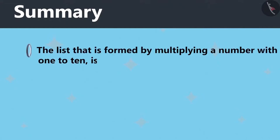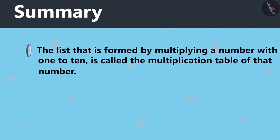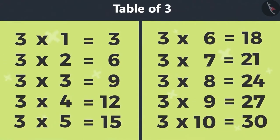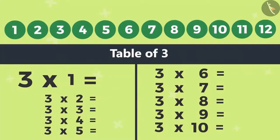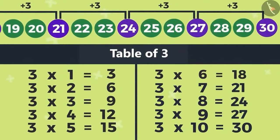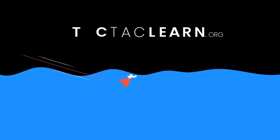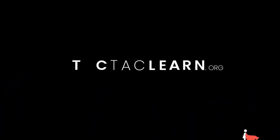Today we've learned that the list that is formed by multiplying a number with one to ten is called the multiplication table of that number. And skip counting method can also be used to find the multiplication table of a number, like what Vandana and Reyanj did by writing every third number starting with three.